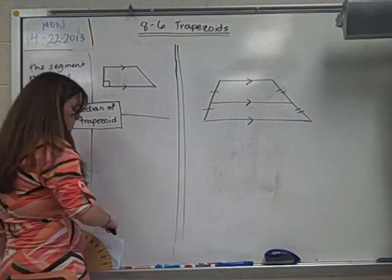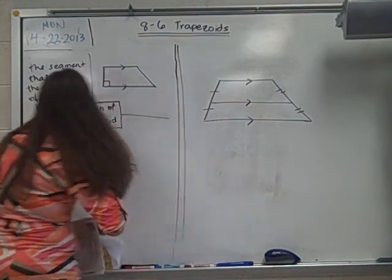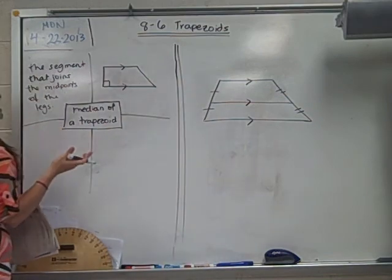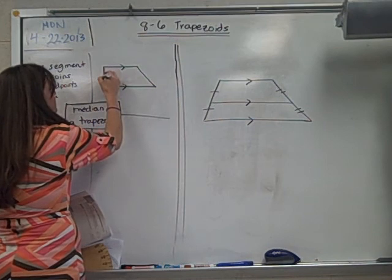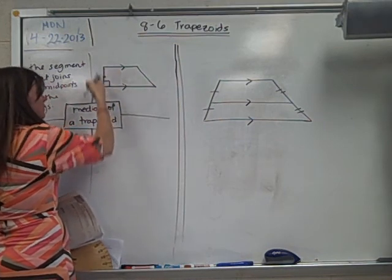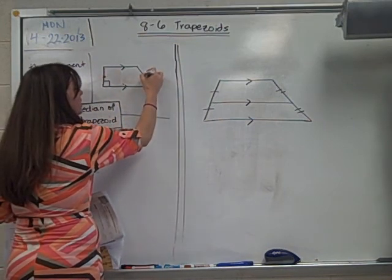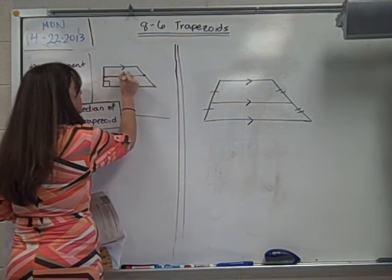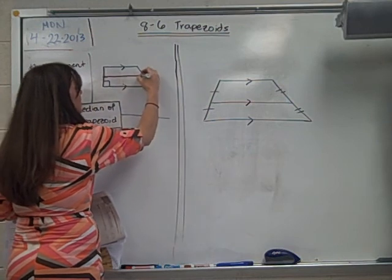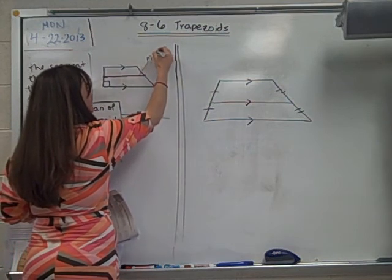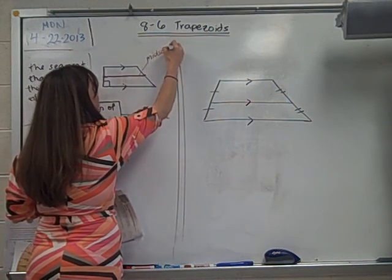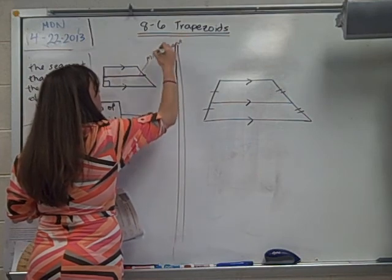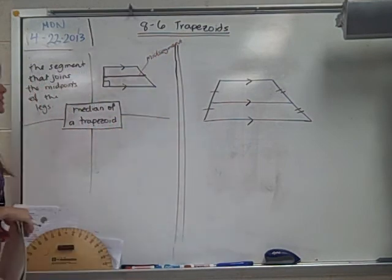By definition, the median of a trapezoid is the segment that joins the midpoints of the legs. I need the middle of this leg over here. I need the middle of this leg over here. And let's put that piece in the middle, that brown piece right there. This is called the mid segment. It is literally the segment that's in the middle of your trapezoid.